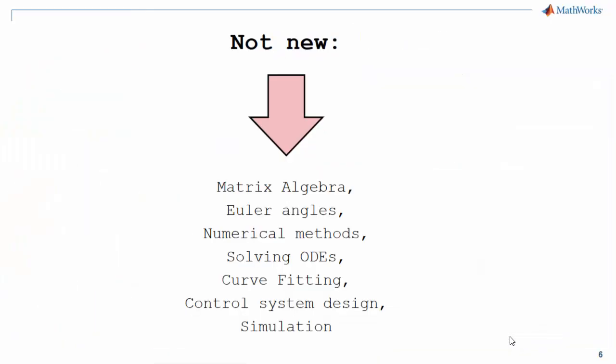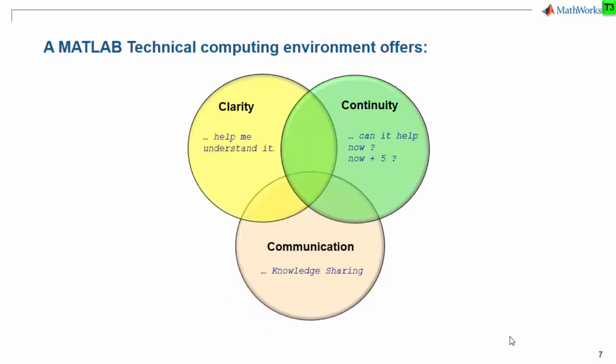Before going further, a lot of the core mathematical and engineering concepts we're about to look at aren't new — matrix algebra, Euler angles, numerically solving systems of ODEs, least squares, curve fitting, control system design. These have been around for decades and centuries. But what is new is how you can have meaningful conversations with your students about these concepts, and that brings us back to the notion of clarity, continuity, and communication.